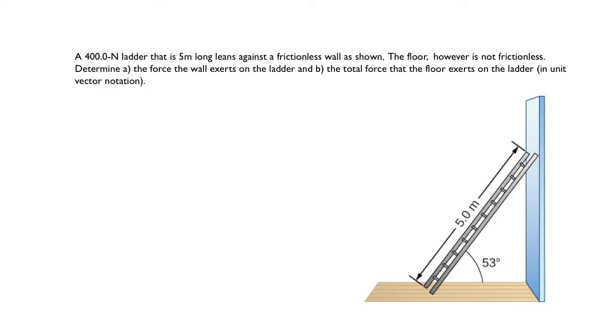So we have a ladder. The ladder is 400 newtons right over here. It's five meters long. So that tells us, since that's a 53 degree angle, that that's four meters and that's three meters. And it's leaning against a frictionless wall, so there's no friction at the point where the ladder contacts the wall, but there is friction on the floor.